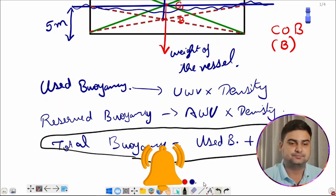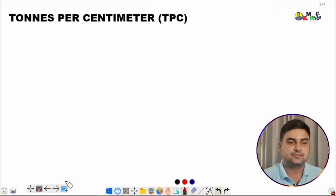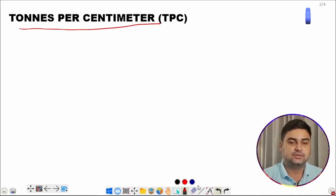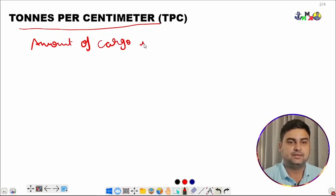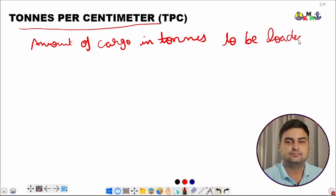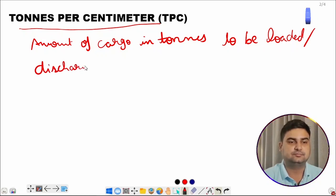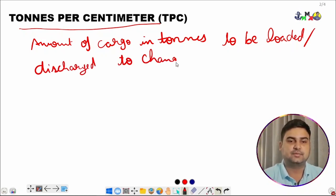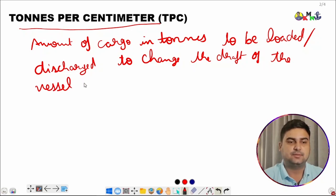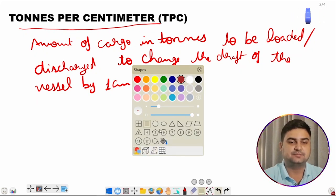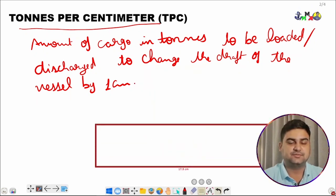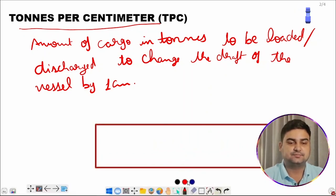Moving forward to TPC — tons per centimeter. TPC is the amount of cargo in tons to be loaded or discharged to change the draft of the vessel by one centimeter. That is the definition of TPC. We will draw a sketch to explain it further.